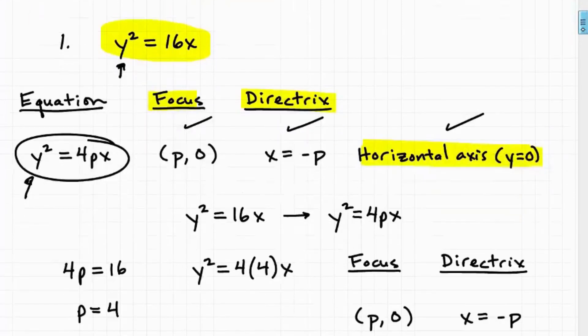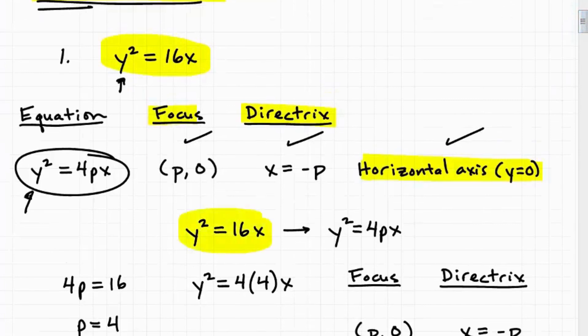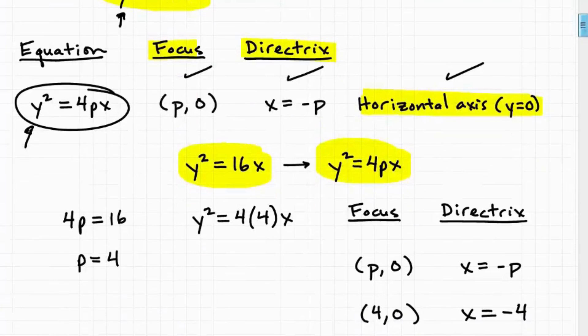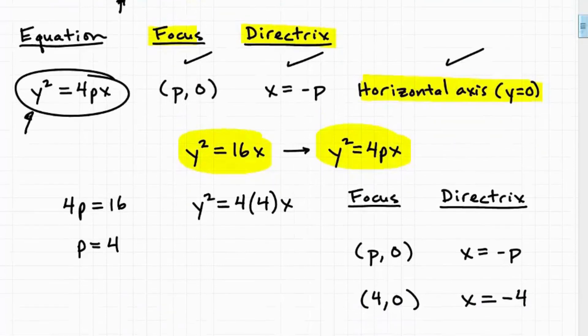So the first thing that we need to do is take our problem, y squared equals 16x, and rewrite it into its standard equation form. And we'll be doing many of these in the previous examples and lesson. So let's just do it real quick. So y squared equals 16x, we're almost there.